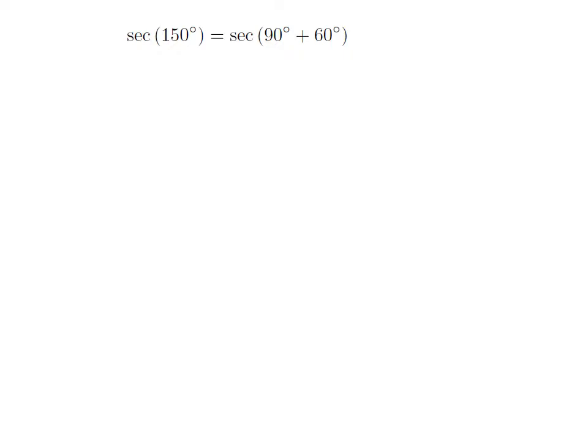As 150 degrees is equal to 90 degrees plus 60 degrees, so secant of 150 degrees is equal to secant of 90 degrees plus 60 degrees.